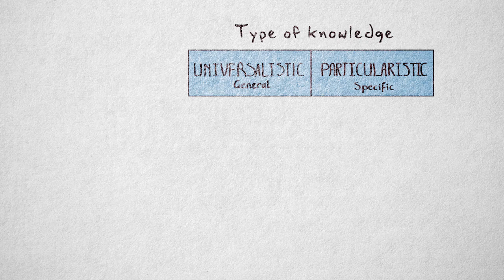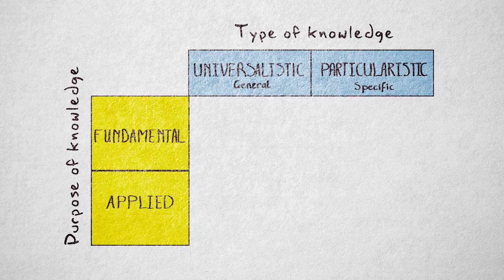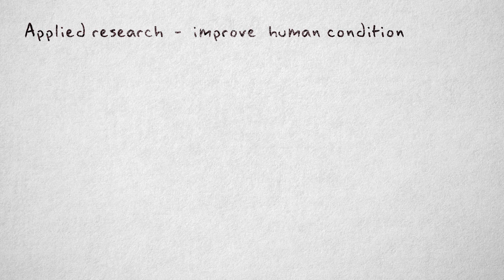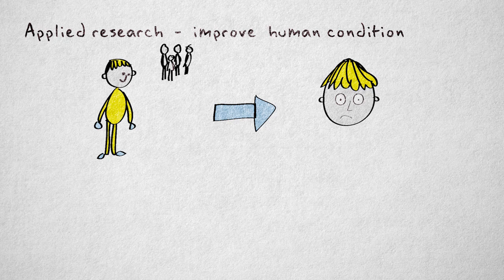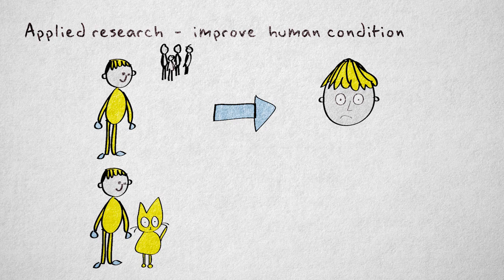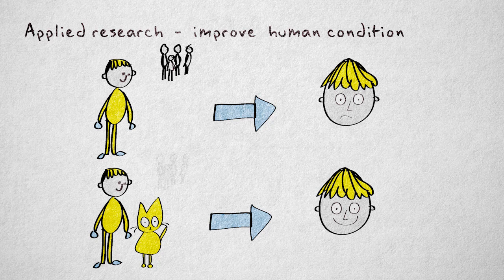A very closely related and largely overlapping distinction is between fundamental and applied research. Applied research is directly aimed at solving a problem. It develops or applies knowledge in order to improve the human condition. Suppose we want to help depressed people, and we think that depression is caused by loneliness. We could create a program that aims to lower depression by making people less lonely — for example, giving lonely depressed people a cat to take care of, and investigating if their feelings of depression actually go down.